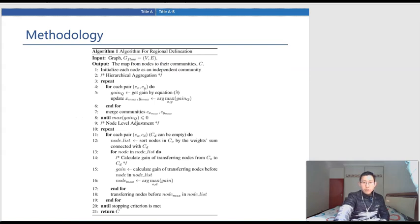The proposed method for regional delineation consists of two main steps: hierarchical aggregation and node moving strategy. In the step of hierarchical aggregation, hierarchical clustering is used to capture the cluster structure of the graph. In every epoch, the aggregation gain of each community pair is first calculated, then the two communities with the highest gain are merged until the gain is no more than zero.